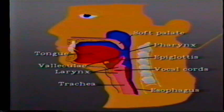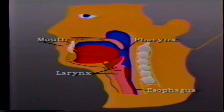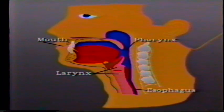Let's start with the normal swallowing process. Swallowing begins in the mouth and extends to the stomach. Body structures involved in the process are the mouth, pharynx, larynx, and esophagus. With normal swallowing, there are three recognized phases.